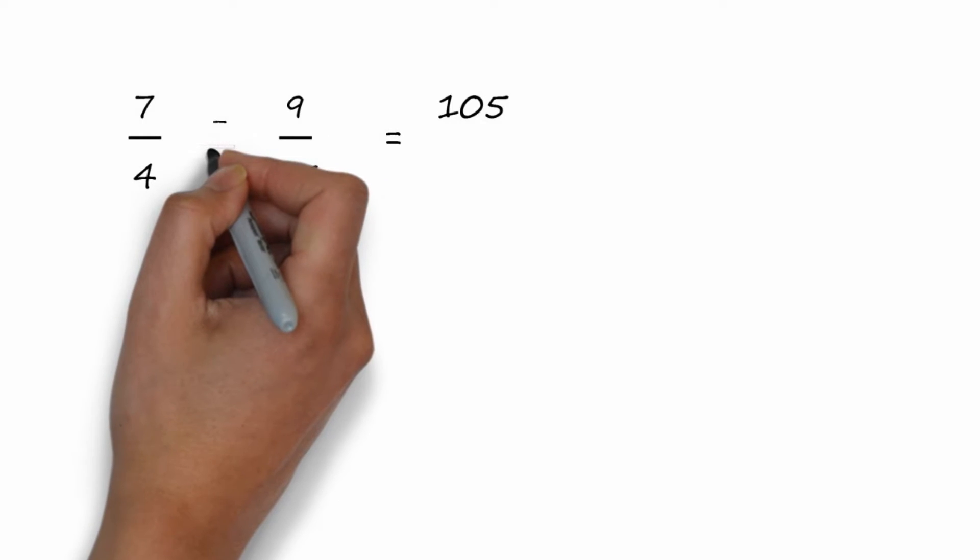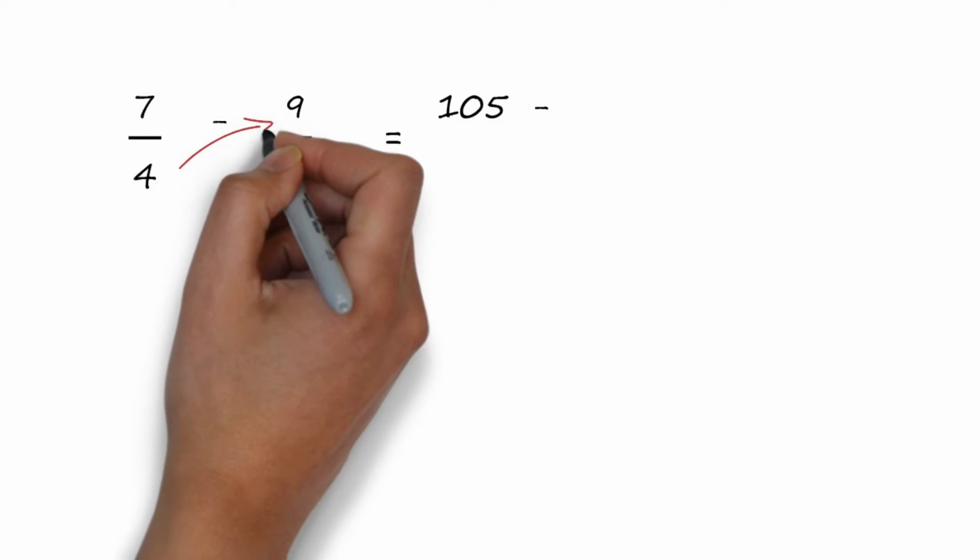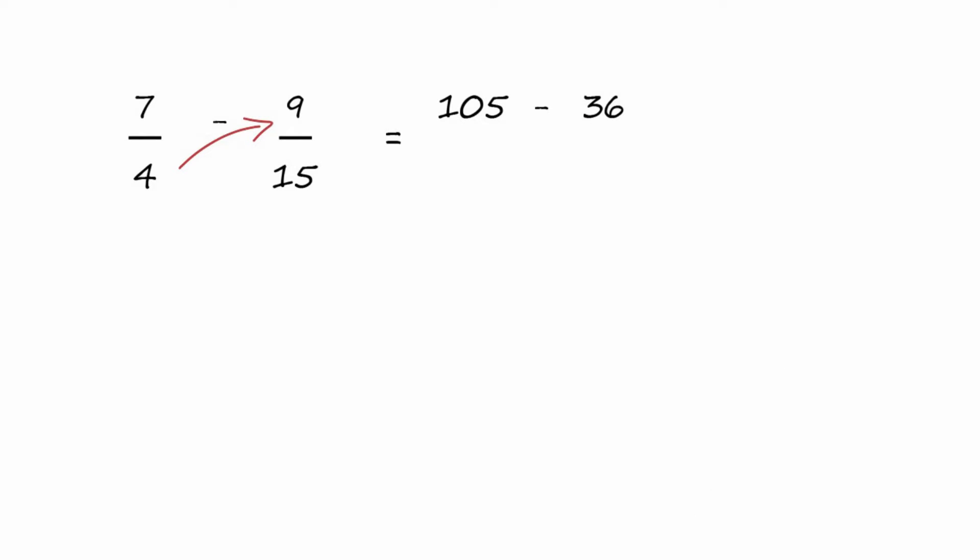Now bring over your minus sign because it's subtraction. Now lower left times upper right, four times nine is 36 in the numerator. All that over the two denominators multiplied, four times 15, which is 60. Put that in the denominator.